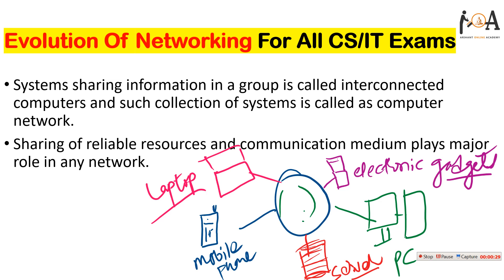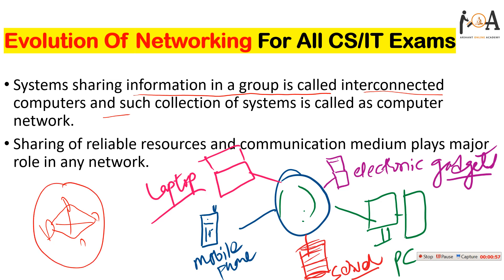Evolution of networking — we are discussing it basically, and then we will elaborate on how today's networking, that is the internet, came into existence. A system sharing information in a group is called interconnected computers. Suppose there are one, two, three, four PCs connected to each other. Such interconnected computers, as a collection of systems that can exchange information from one PC to another, one device to another, is called a computer network.